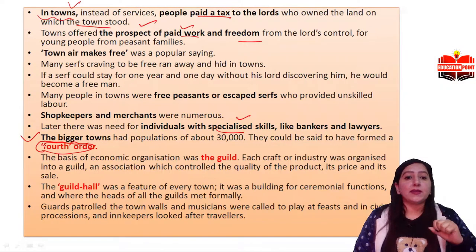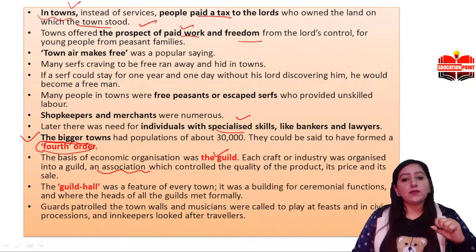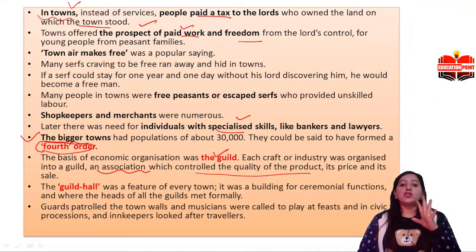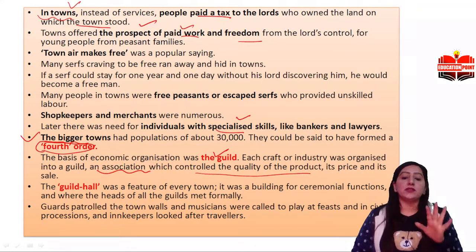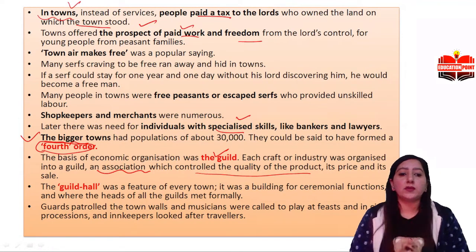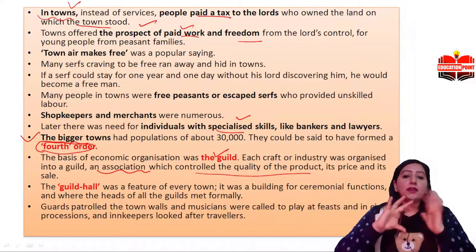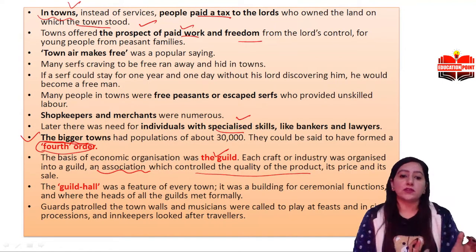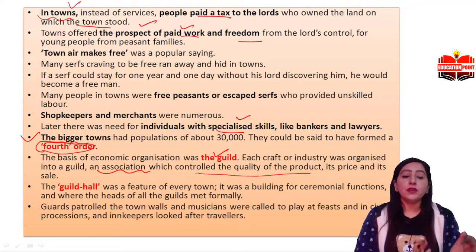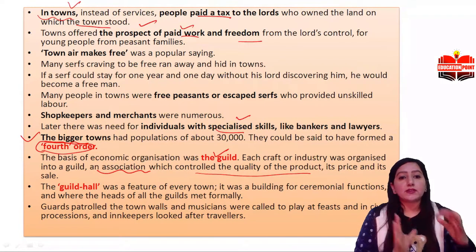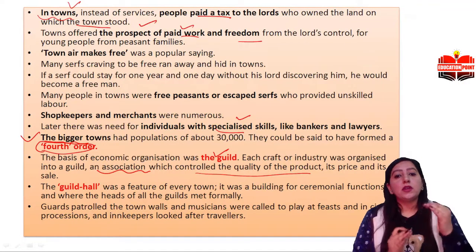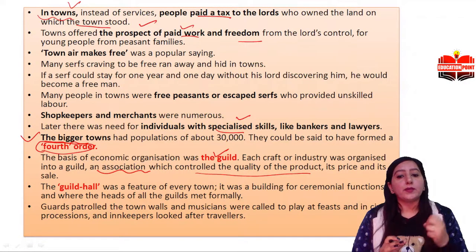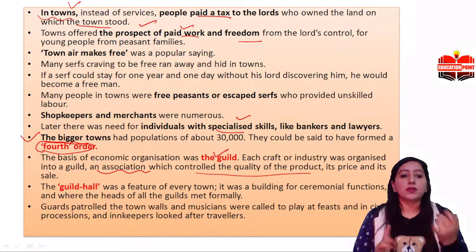The guild was made — what is the guild? It is an association which controls the quality of the product. Each craft and industry was organized into a guild in these big towns. Every craft and industry started an organization — an association — to control the quality of the product, the prices, and the sales.